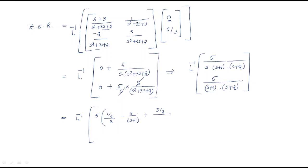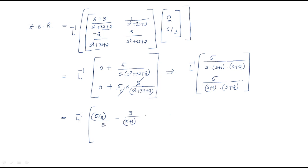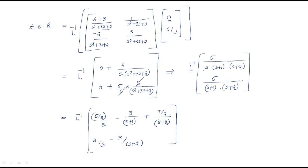Combining constants, the partial fraction result for the first element is: 5/2·(1/s) - 3/(s+1) + 3/2·(1/(s+2)). For the second element, partial fractions yield: 3/(s+1) - 3/(s+2).